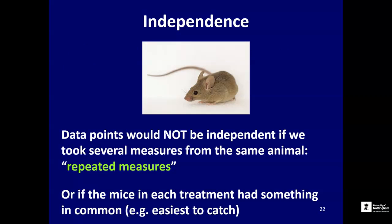The data points would not have been independent if we had done something different. For example, if we were short of mice and tried to get 30 sperm samples from only 10 mice by taking three samples from each mouse, those groups of three data points share in common that they came from the same mouse. That effectively changes the statistical power we thought we had — we thought we had 30 replicates, but in reality we've only got a sample size of 10, with three pseudo-replicates within each mouse.